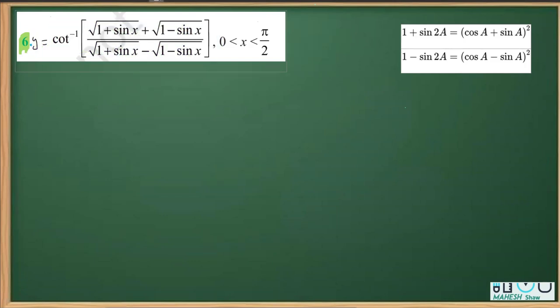So for doing so, what we are going to do is apply these two identities. In the first, we will be applying 1 plus sin 2a is cos a plus sin a whole square and likewise we are going to apply the other identity also of minus.